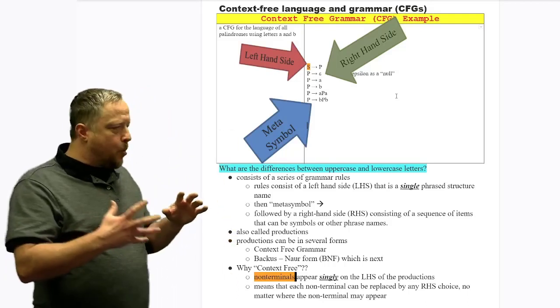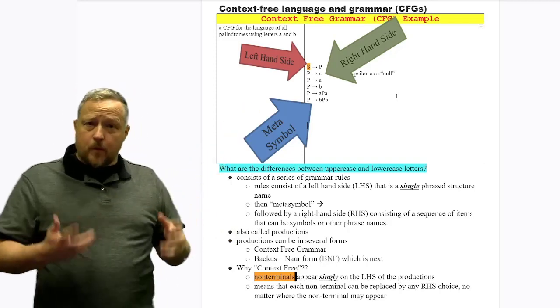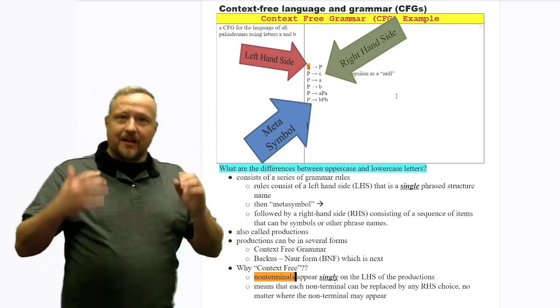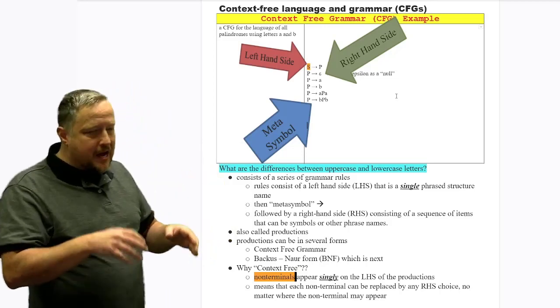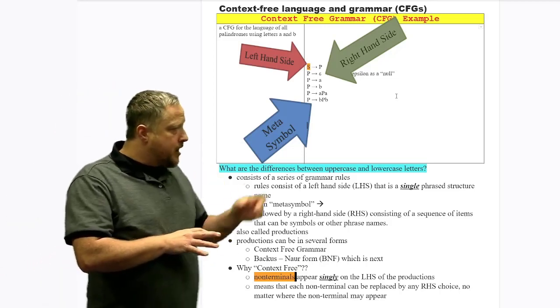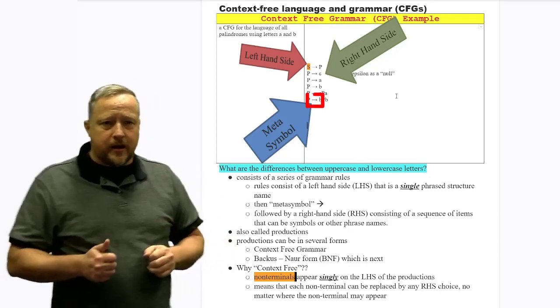But the context-free part, we actually had to break up the grammar into several parts. We literally have a left-hand side, a right-hand side, and then the meta symbol. And that meta symbol is literally the arrow that you see in between here.